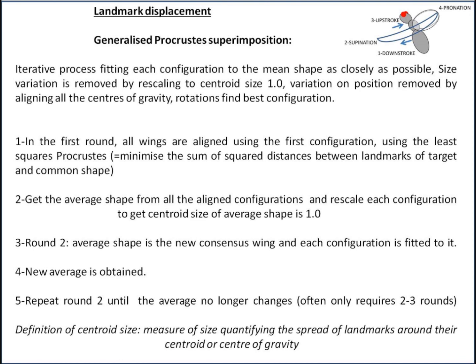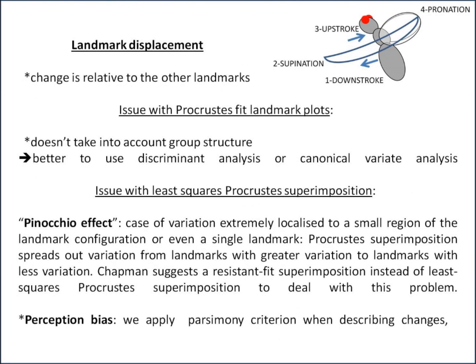Centroid size is a measure of size quantifying the spread of landmarks around their centroid, or center of gravity. There are issues with Procrustes landmark plots: if you plot all the superimposed landmarks, it doesn't account for group structure, so there's no guarantee you'll see group differences even if they exist. For that it's better to use discriminant analysis or canonical variate analysis, which focuses on differences between groups. These plots also don't show covariation among landmarks, so Klingenberg strongly advises against using landmark superimposition plots in formal publications.